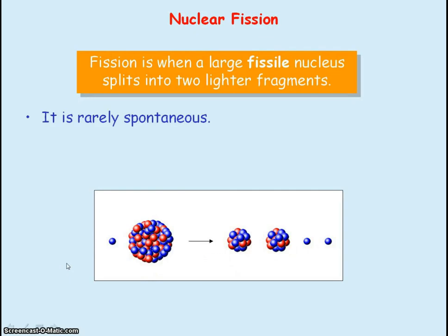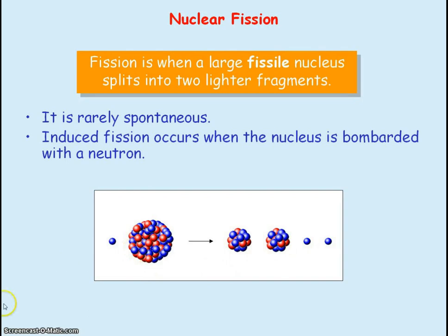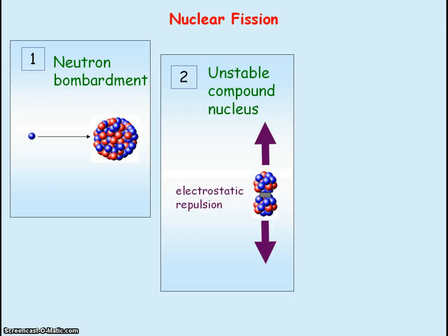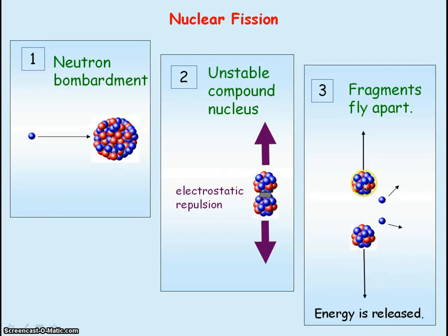Fission is rarely spontaneous. It has to be induced by bombarding the fissile nucleus with a neutron. The fissile nucleus absorbs the neutron resulting in an unstable compound nucleus whose parts repel each other electrostatically so that the fragments fly apart, that is the lighter nuclei fly apart and you also get some neutrons being released and this process results in overall energy being released.